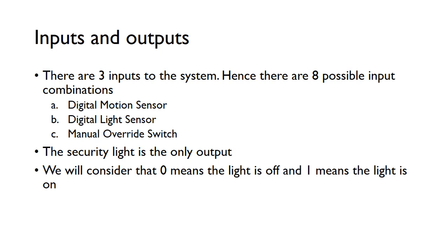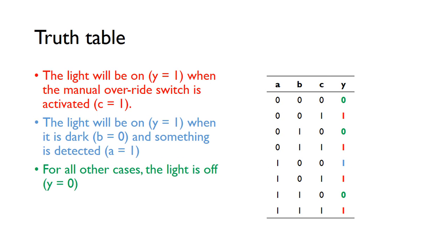There's only going to be one output, and that's the output fed into the bulb. In terms of the output, we'll say when the output is zero the light's off, and when it's one the light is on. We can now go through and create the truth table from this design problem.